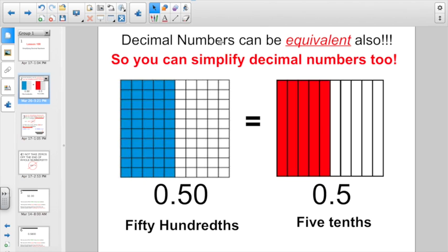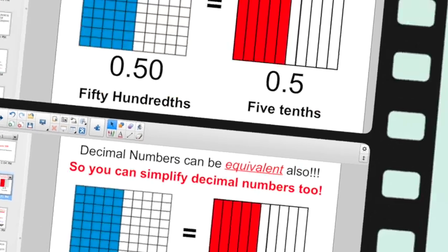It says here that decimal numbers can be equivalent also. Remember that word equivalent means equal. So you can also simplify decimal numbers. Here we have 50 hundredths. Here we only have 5 tenths. But if you look, they are the same equivalent equal piece, right? So what are we going to do about simplifying decimal numbers?